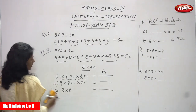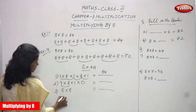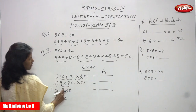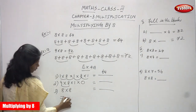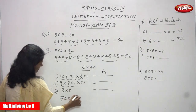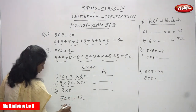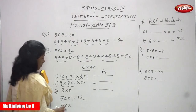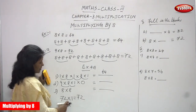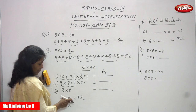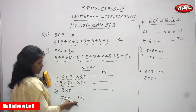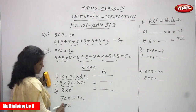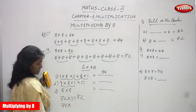Next, the second sum: 9 into 8 is 72. You know the table — 9 into 8 is 72. Then 72 into 1: if you multiply any number by 1, you get the same number — the number itself. So 72 into 1, you can get 72.